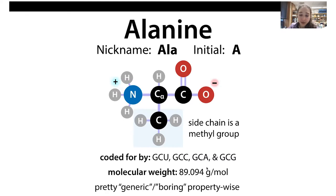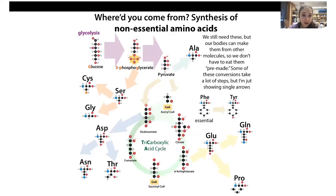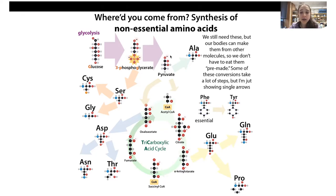Alanine's molecular weight is 89.094 grams per mole. We talked about how it's pretty generic and boring property-wise, but that doesn't mean it's not interesting or important. It is classified as non-essential — but in the dietary sense, that just means we can make it ourselves and don't need to get it pre-made in our food.